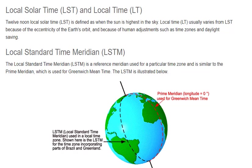The Local Standard Time Meridian (LSTM) is a reference meridian used for a particular time zone, and is similar to the prime meridian which is used for Greenwich Mean Time. The LSTM is illustrated below.